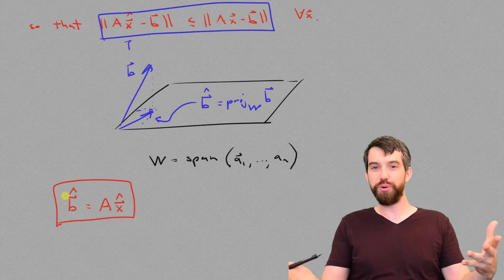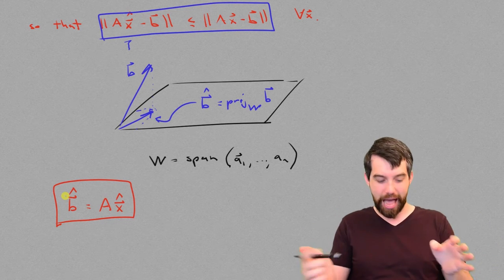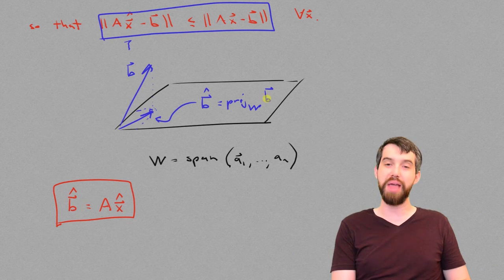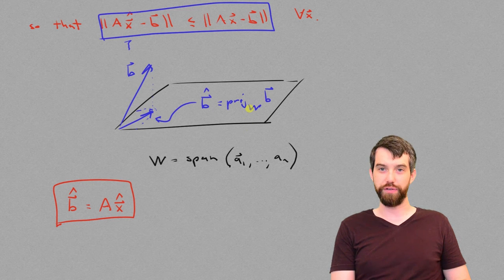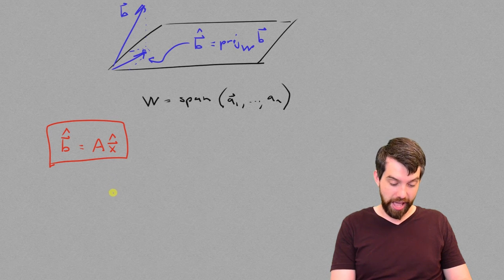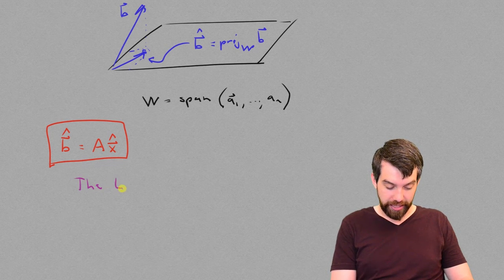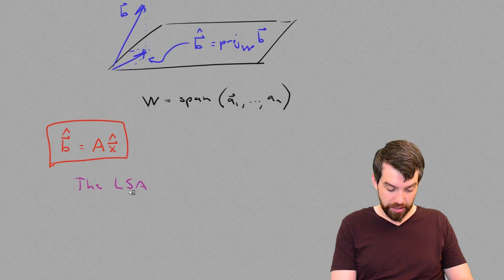So, we've replaced ax equal to b with this new thing, ax hat equals to b hat, where b hat is given by my familiar old projection formula. So, in other words, if I aim to be finding my closest vector, I want to find my least squares approximation,